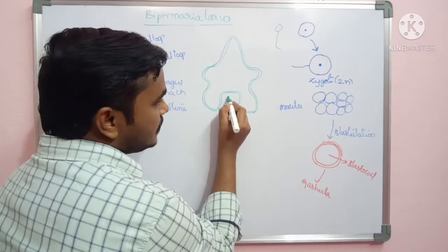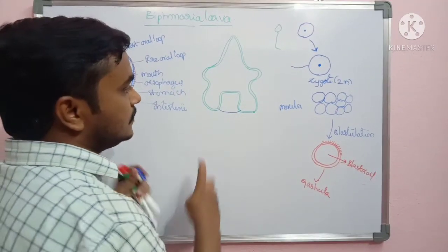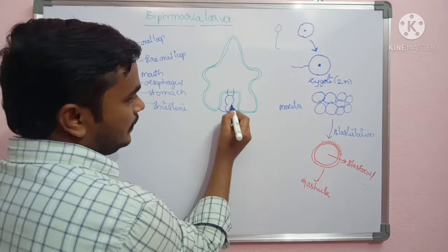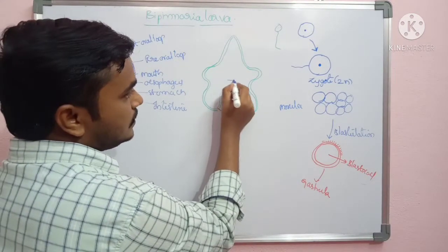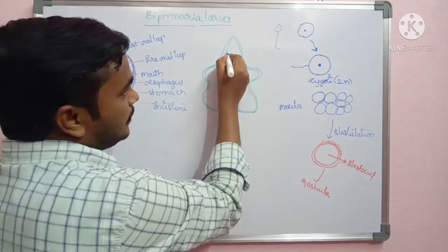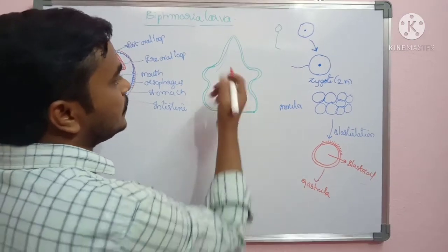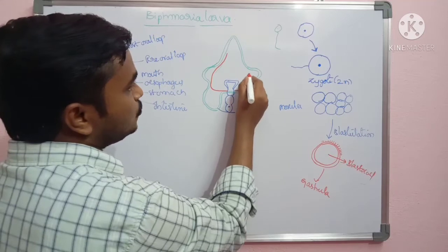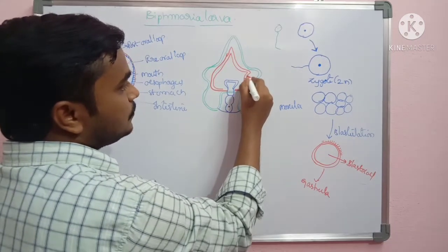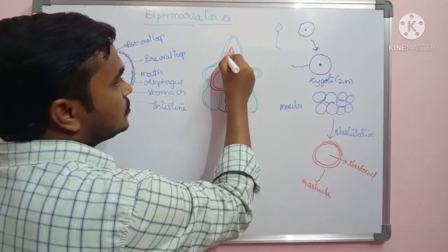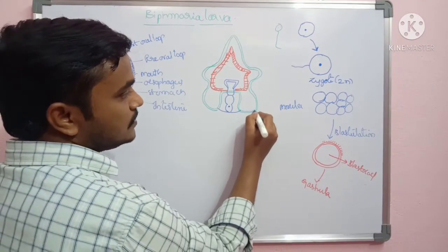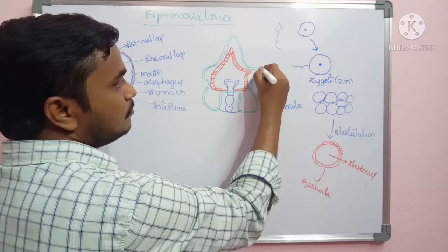This region is the blastopore. In this area we will see the anal region. This particular part contains esophagus, stomach, and intestinal region. Here we can see the oral region. From here we will see the pre-oral loop, which is present in the Bipinnaria. This is the blastopore anal region with pre-oral loops. These are serrated ridges that represent the body of Bipinnaria.